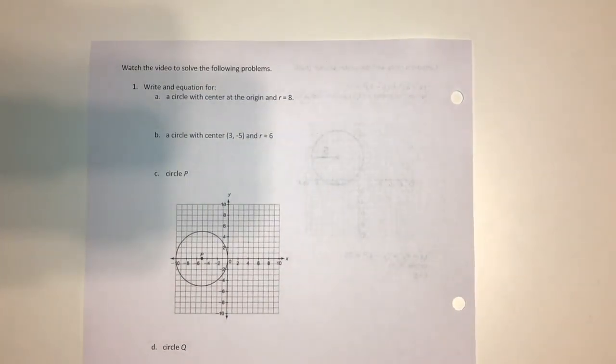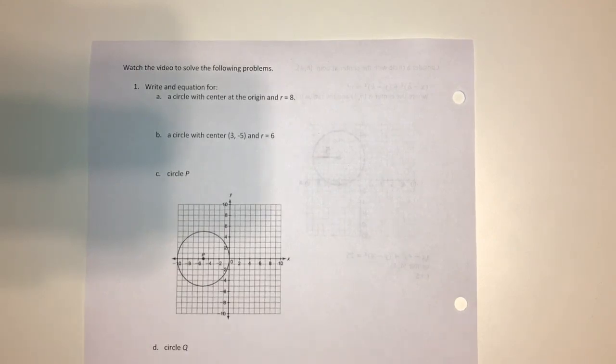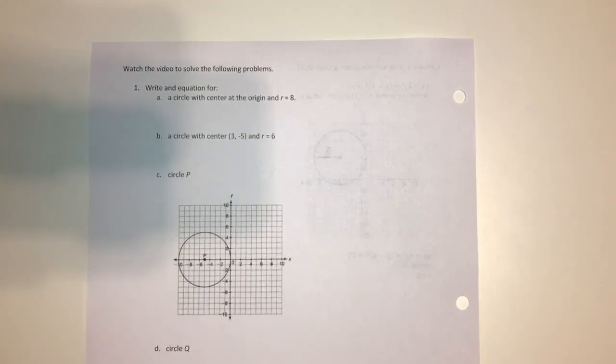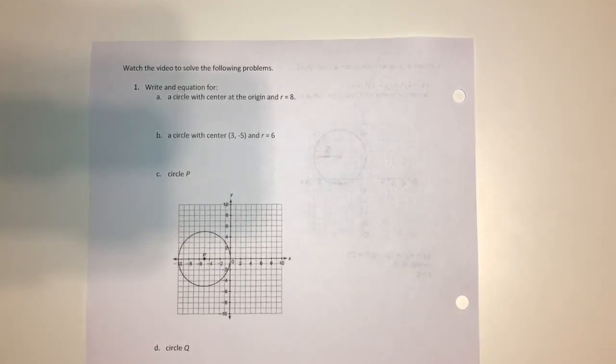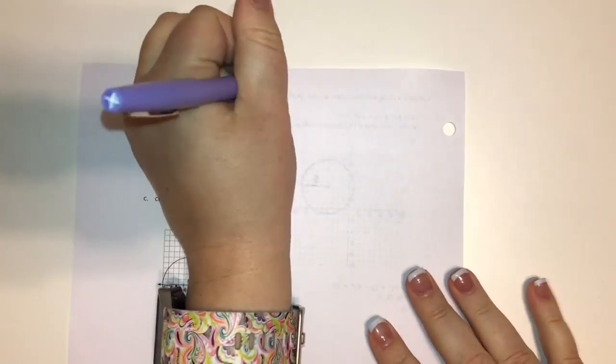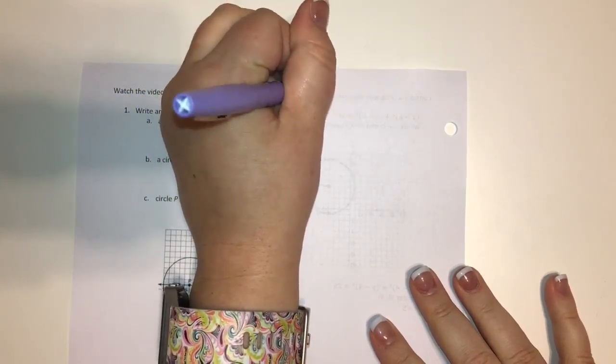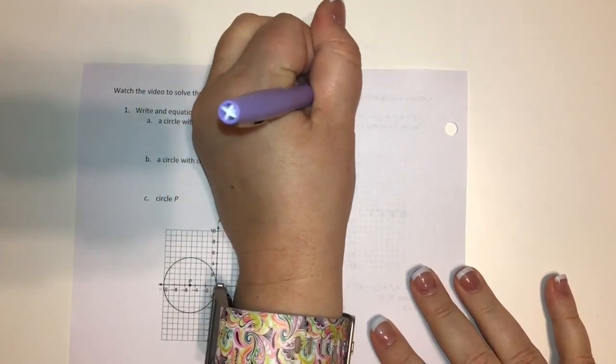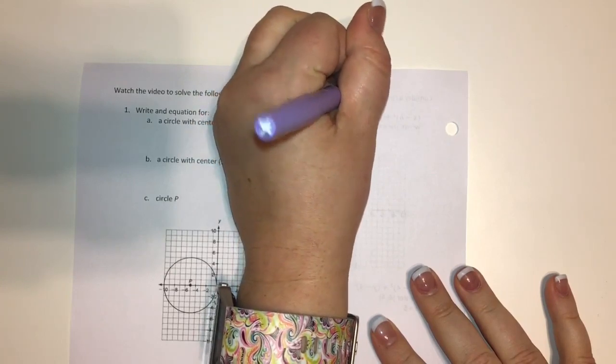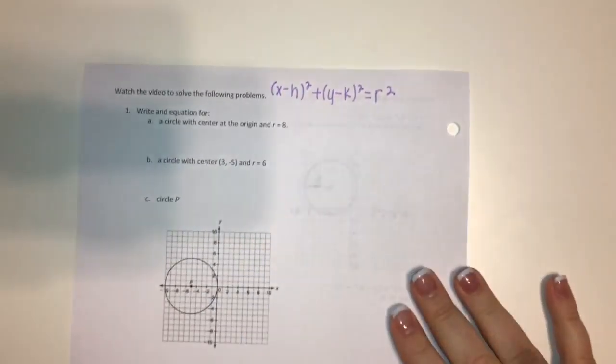Equations of circles are confusing to students. They're based on the Pythagorean theorem, as are many things in geometry, but with equations of circles we're just plugging different parts in. At the top, I'm writing our standard equation of circles: (x - h)² + (y - k)² = r².